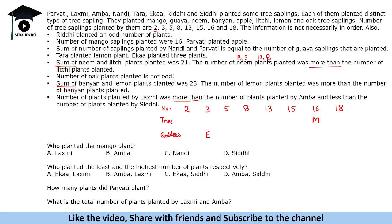Oak plants is not odd — that means it is even. Sum of banyan and lemon plants was 23, and the number of lemon plants was more than the number of banyan plants. Banyan plus lemon could be 18 and 5, or 15 and 8 — two possibilities. Since lemon is more than banyan, we can have combinations: either 18 and 5 with 13 and 8, or 15 and 8 with 18 and 3. Let's fill in two cases.